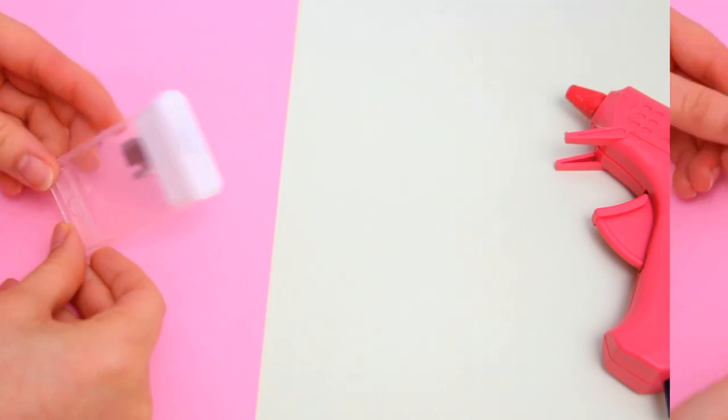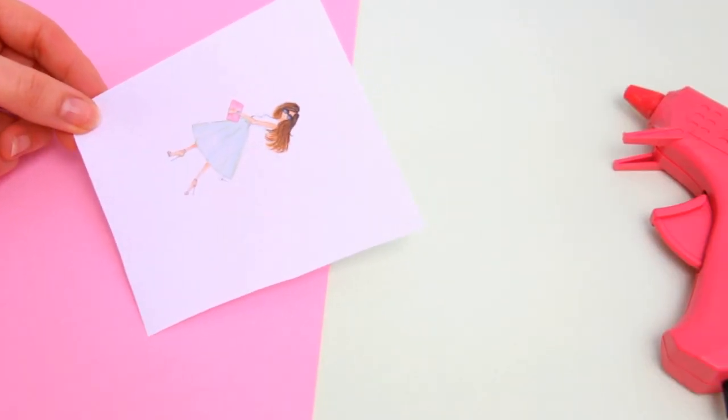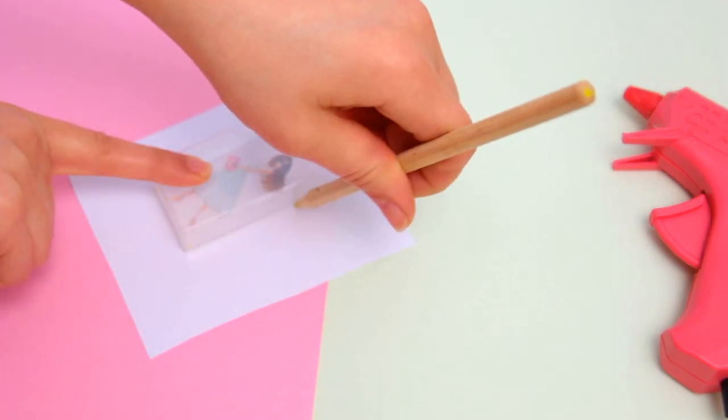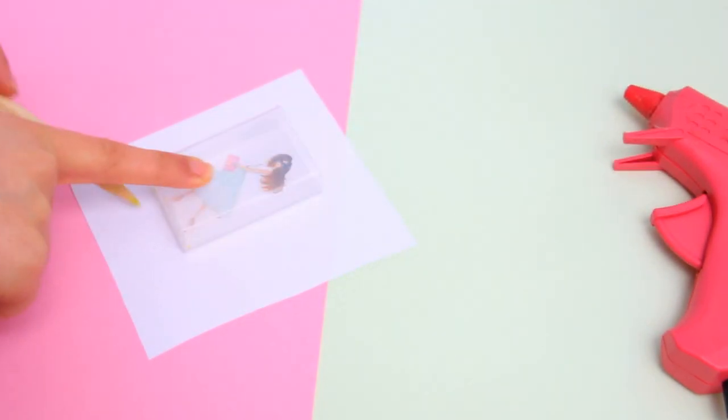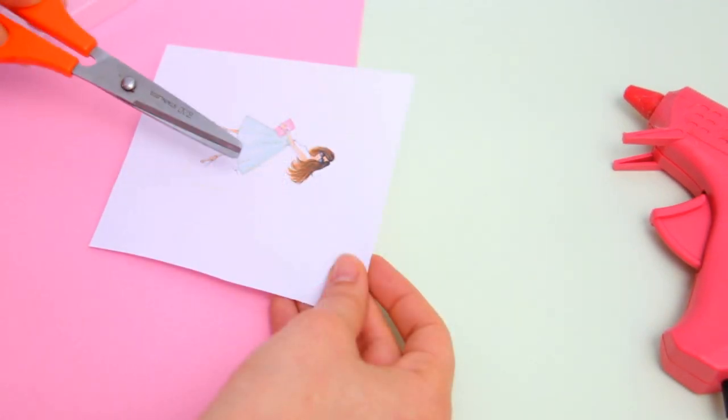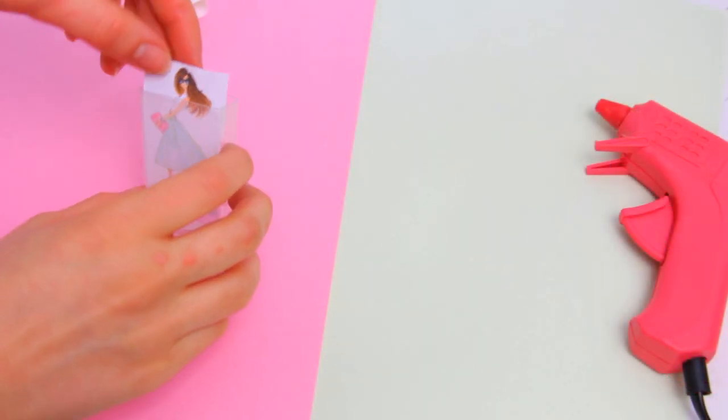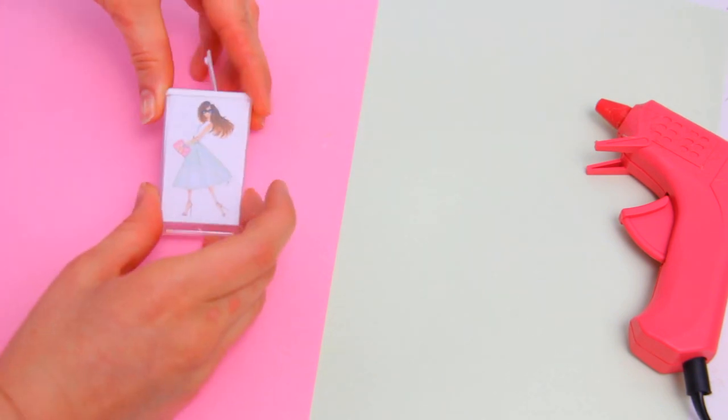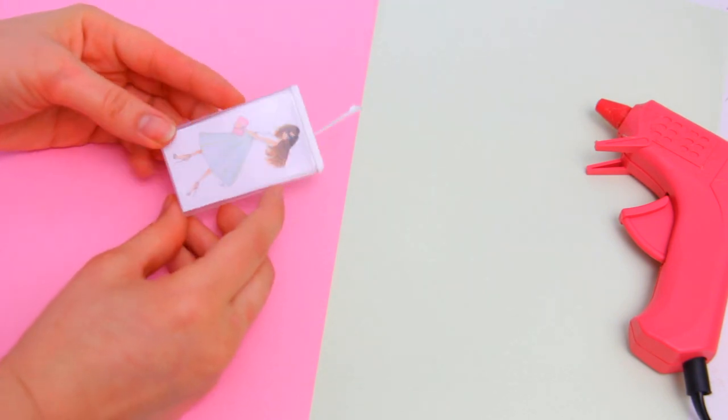Now there are millions of ways you can decorate this. For example, you can print out any picture or illustration you want, like this one. Outline the shape of the container and cut it out. Then place it in the container like so and that's it.